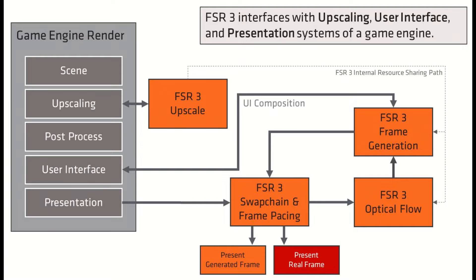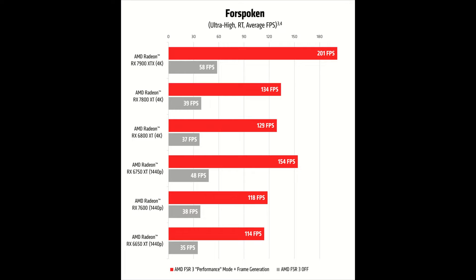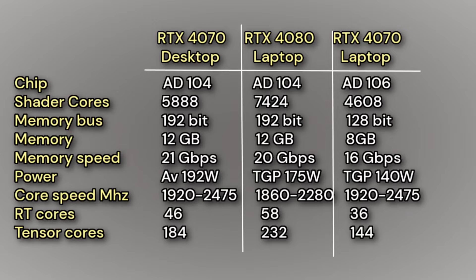The laptop 4070 is basically a laptop 3070 Ti with the ability to do NVIDIA frame generation. Given that AMD has now developed its own software-based FSR III frame generation that can be used on previous generations of NVIDIA GPUs, it makes the laptop 4070 even less enticing. The laptop 4080 actually has 26% more shader cores, but due to its lower graphics power of max 175 watts compared to an average of 192 watts on the desktop 4070, its clock speed can be as much as 25% lower — so we can expect performance to be similar on average.